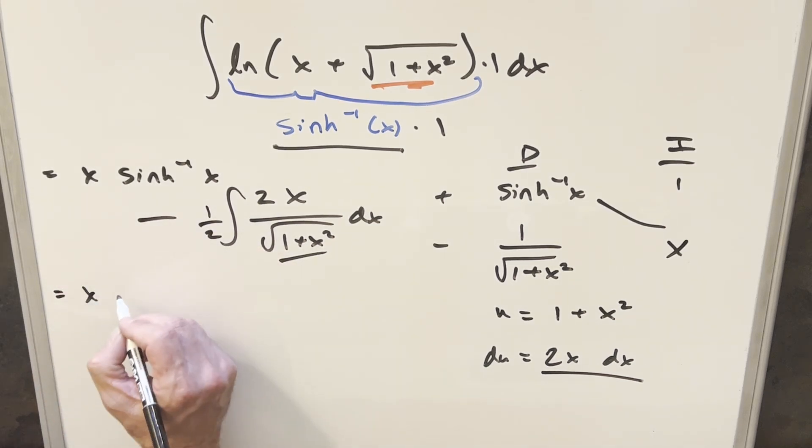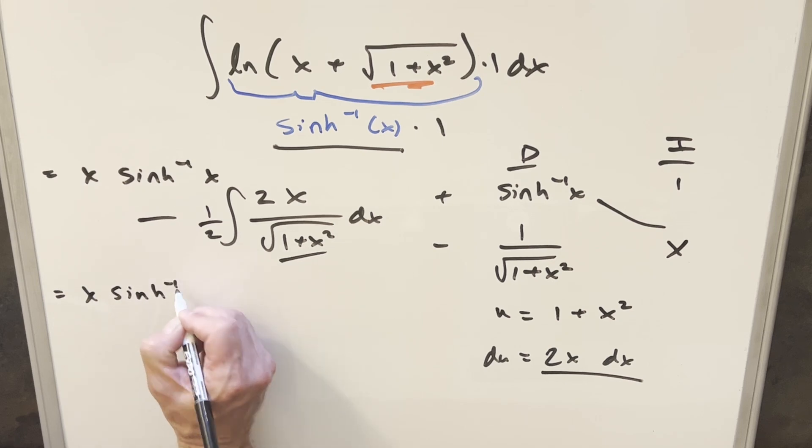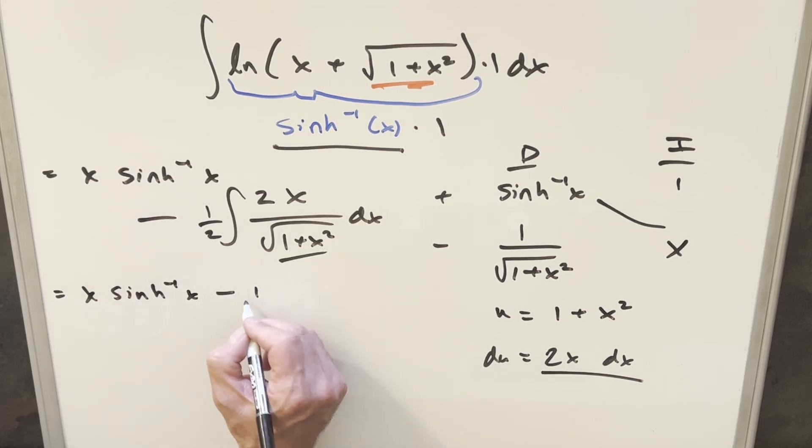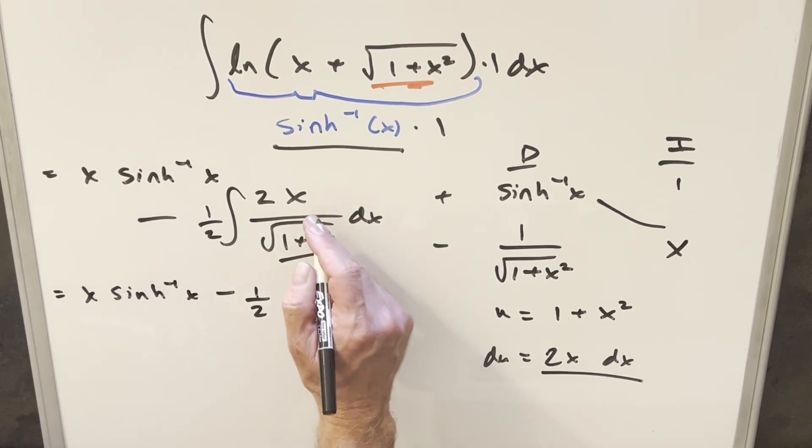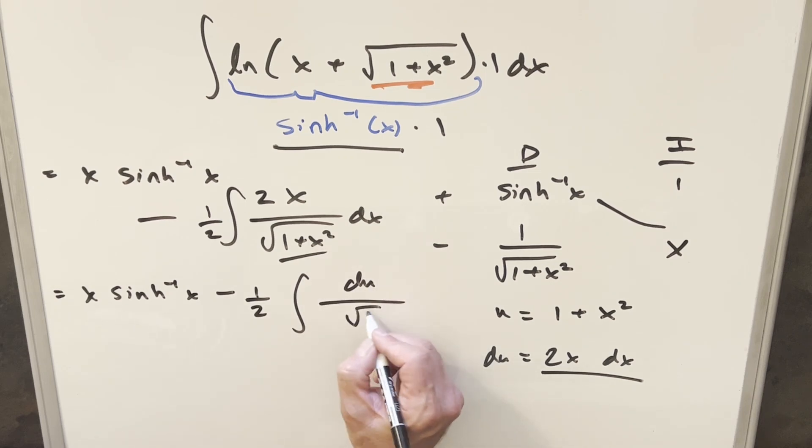Come down here. We'll bring along this x inverse sinh minus a half. And this is going to transform. Again, the numerator is du. And this is going to be square root of u here. But let's bring this into the numerator. If this is u to the one-half, you bring it into the numerator, it's going to become u to the minus one-half.